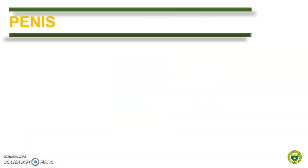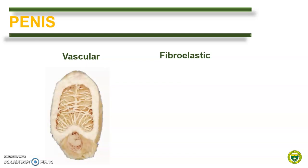Finally, we compare the male copulatory organ, which is the penis. The penis can be classified basically into two types: the vascular type and the fibroelastic type. The vascular type penis contains a lot of erectile tissue and little connective tissue, so during erection there is both an increase in length and diameter of the penis. Take a look at the cavernosa tissue and note the erectile tissue present. The vascular type is present in dogs, cats, and horses.